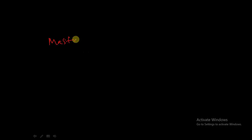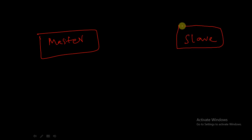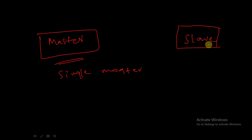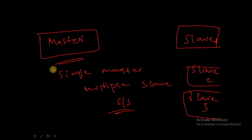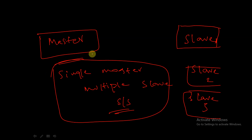Here we have a master and the master is communicating with a slave. This is a single master system. We have slave 1, slave 2, and slave 3. So this is a single master and multiple slave system.